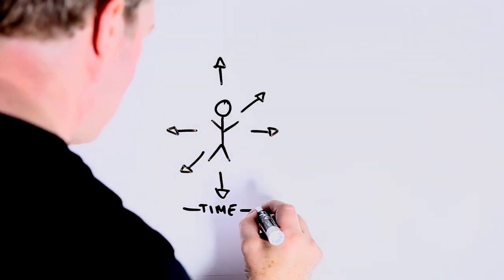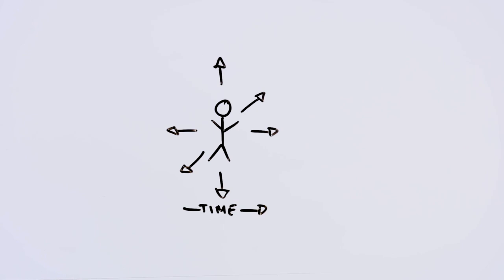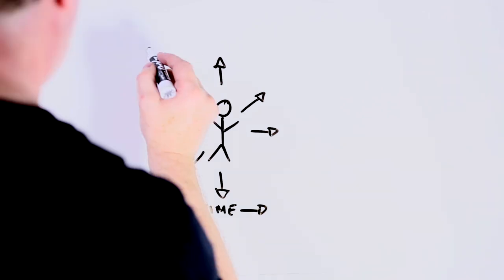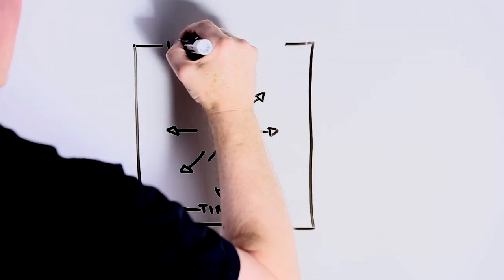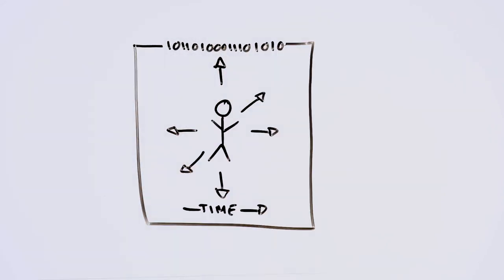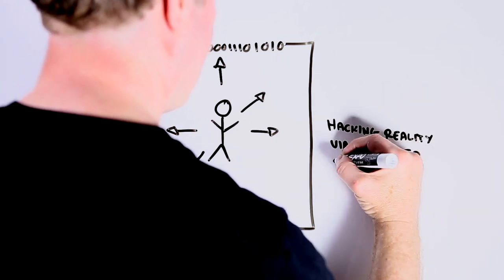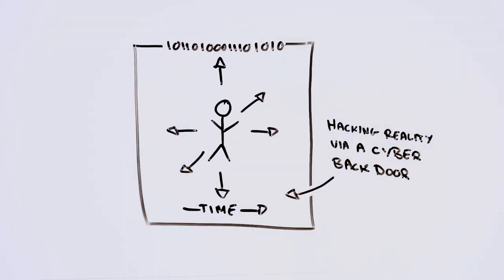And we're used to thinking of time as a fourth dimension. But cyberspace allows us to work outside of these more conventional dimensions and dip in and out of them at will. In other words, cyberspace provides us with a backdoor to re-engineering and redesigning our reality.